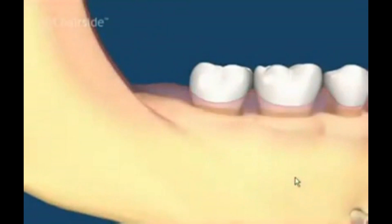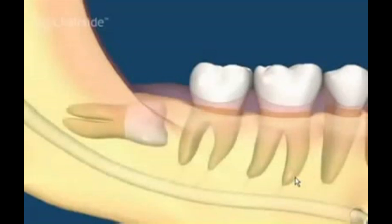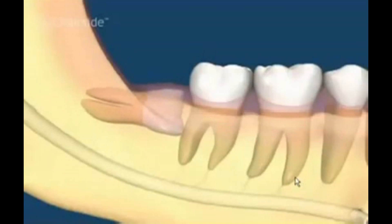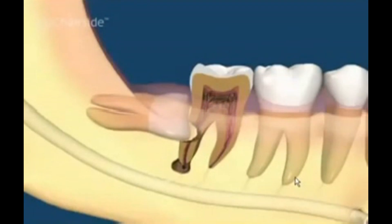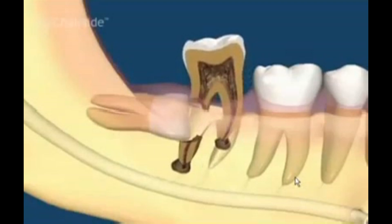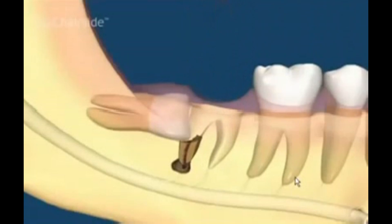This movie shows the importance of removing wisdom teeth before they cause trouble. Sometimes as the tooth erupts horizontally, it may be stopped by the molar ahead of it. In cross section, we see it can continue to erupt and resorb the tooth ahead of it. This in turn may cause pulpal damage in addition to completely destroying the root. Now both the wisdom tooth as well as the tooth ahead of it will need to be removed.